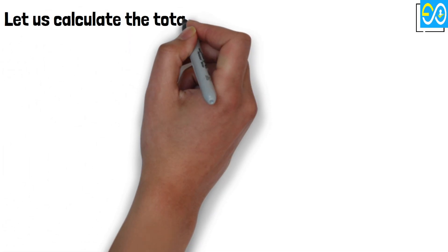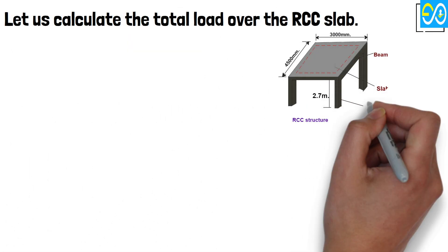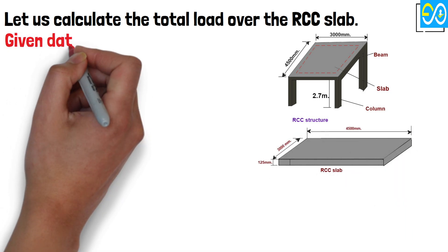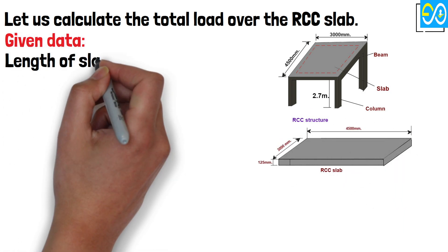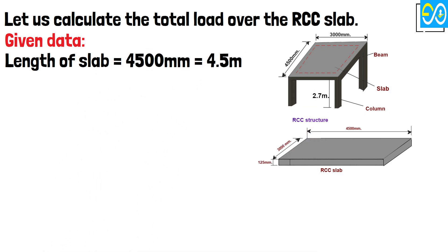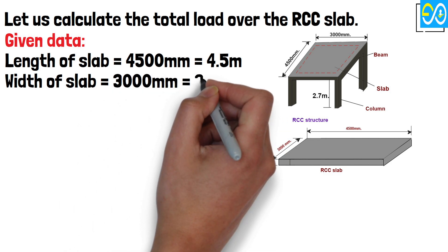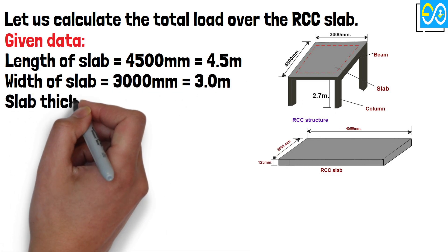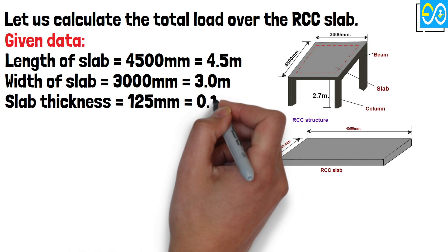Let us calculate the total load over the RCC slab. Given data: length of slab equals 4,500 mm equals 4.5 m, width of slab equals 3,000 mm equals 3.0 m, slab thickness equals 125 mm equals 0.125 m.